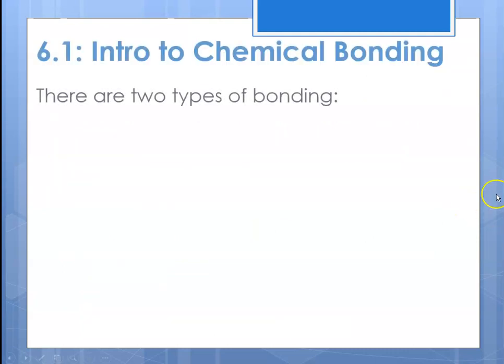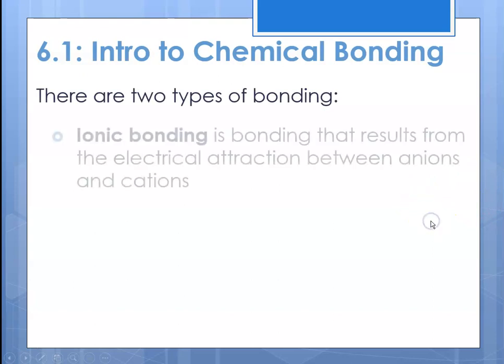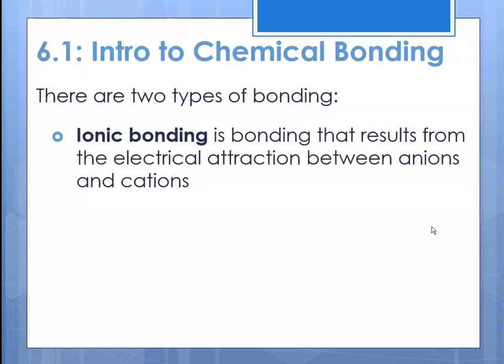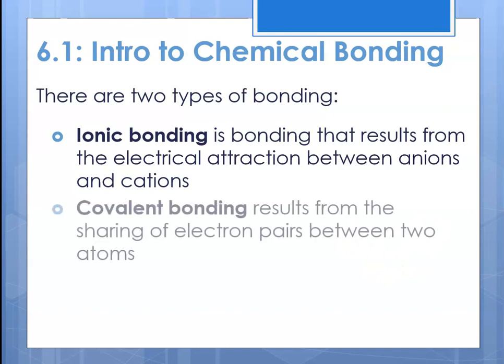There are two types of bonding we will talk about. Ionic bonding is bonding that results from the electrical attraction between anions and cations. With ionic bonding, somebody gained electrons and somebody lost electrons, so there's a negative ion and a positive ion and they are attracted to each other. The other type is covalent bonding, which results from the sharing of electron pairs between two atoms.